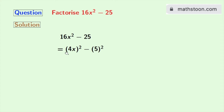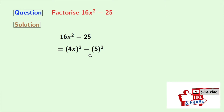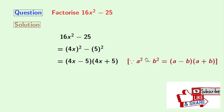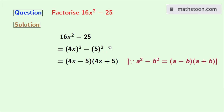Notice that this is in the form of a² minus b², where a is 4x and b is 5. So we can apply the formula of a² minus b² here. Applying this formula: (4x)² minus 5² equals (4x minus 5) times (4x plus 5).